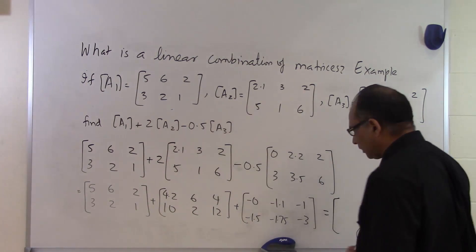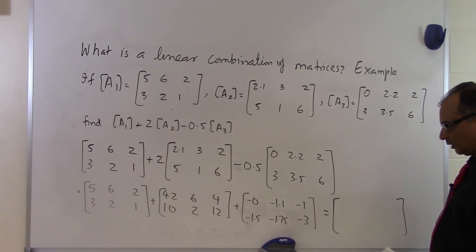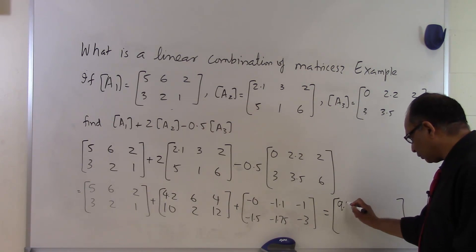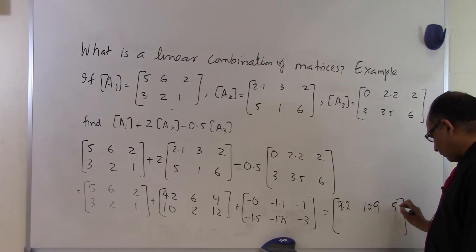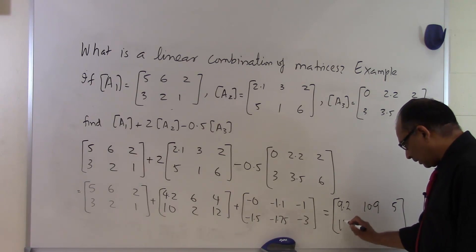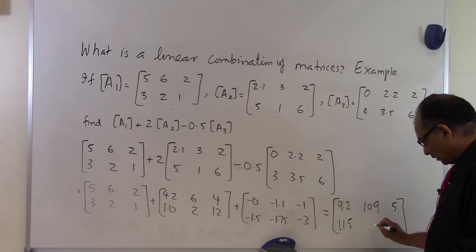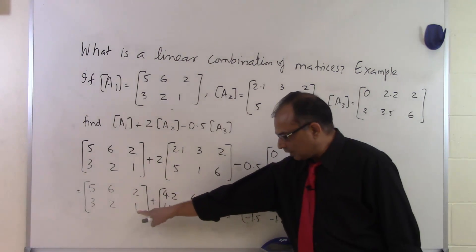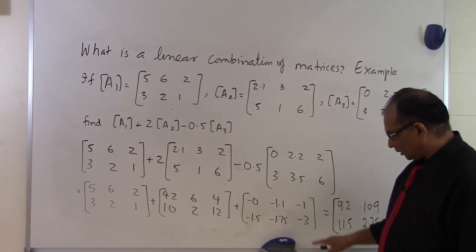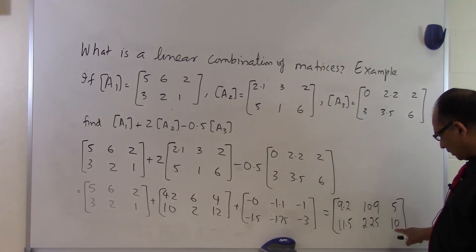So the resulting matrix which you will get by adding all those three matrices is as follows. You will get 9.2 which we just calculated, 10.9, 5, 11.5, 2.25, and 10. So for example, if you are looking at this 10, how did I get this 10? It's simply adding 1 to 12, that's 13, 13 minus 3 is 10, and that's what we get 10.